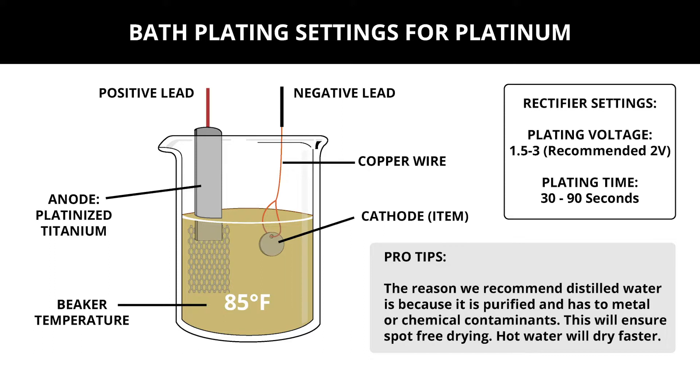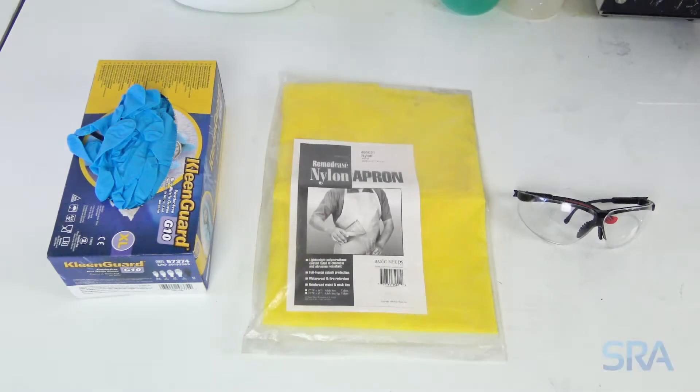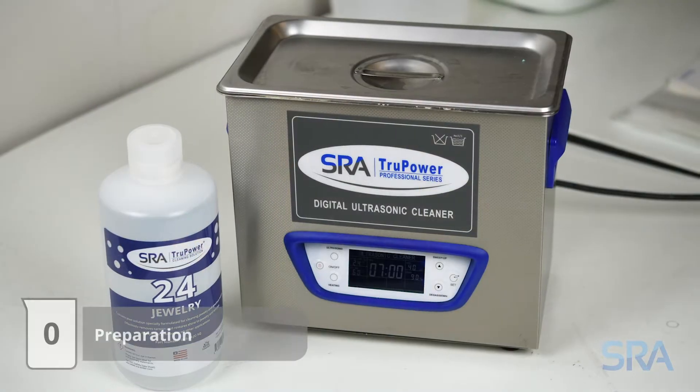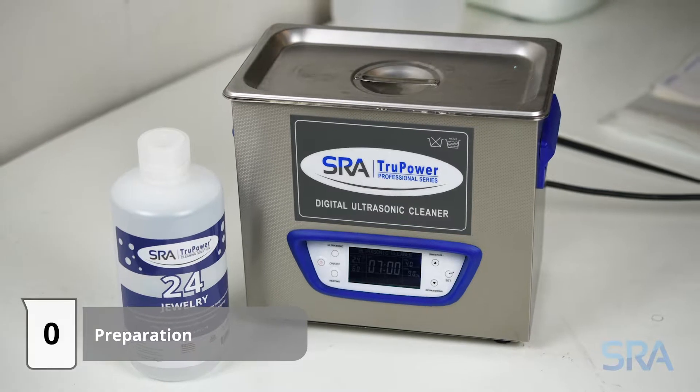With everything set we're ready to get started. For safety we recommend wearing gloves, an apron, and protective eyeglasses. Also ensure your work area is properly ventilated. For repair items or badly oxidized pieces you'll want to